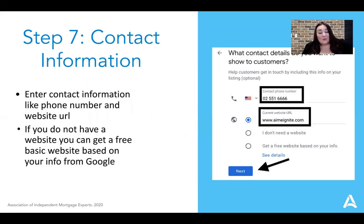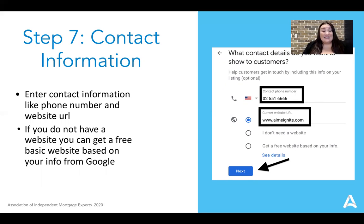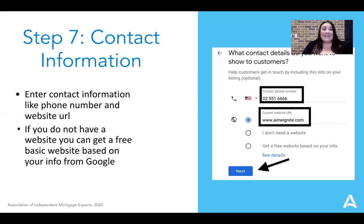Step number seven is your contact information. Make sure you're inputting the right phone number and the right website URL. You just want to make it as easy for people to find your business as possible. If you don't have a website, there's a button you can click that says 'I don't need a website.' I would set up your website first and then set up your Google My Business profile. Google does have an option to set up a free website based on your information, but it's going to be very bare bones — I'd go through something more enhanced with more options.